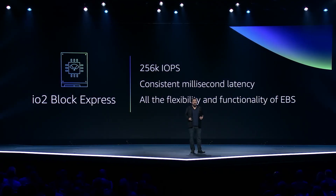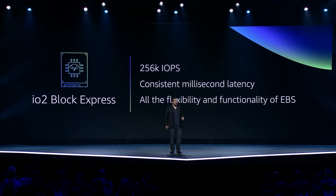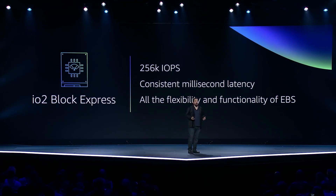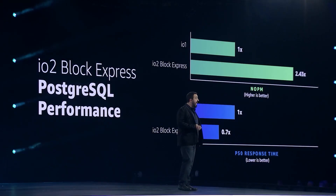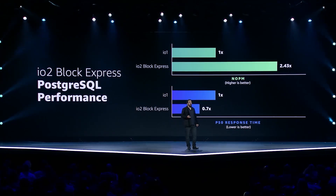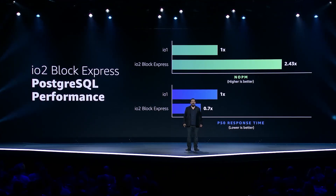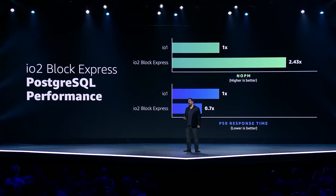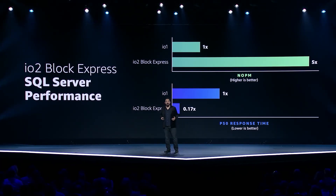It's not just EC2 instances using Nitro SSD. Earlier this year, we launched a high-performance version of EBS called Block Express. The EBS IO2 Block Express volumes are built using Nitro SSDs and offer the highest performance volume type in the cloud. IO2 volumes offer 256,000 IOPS with consistent sub-millisecond latency. IO2 is a great option for running databases — Postgres SQL runs significantly better with IO2 volumes, with latency reduced by 30% and throughput increased by 140%. IO2 works great with SQL Server as well, with latency reduced by 83% and throughput increased by 400%, making IO2 one of the best ways to run SQL Server.